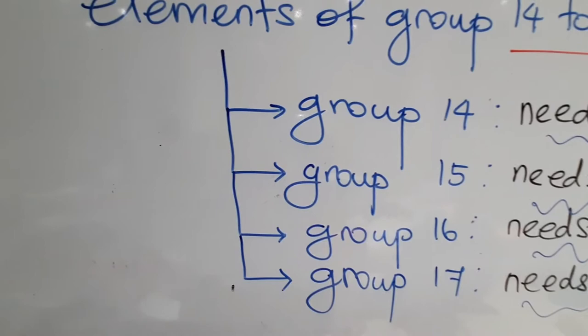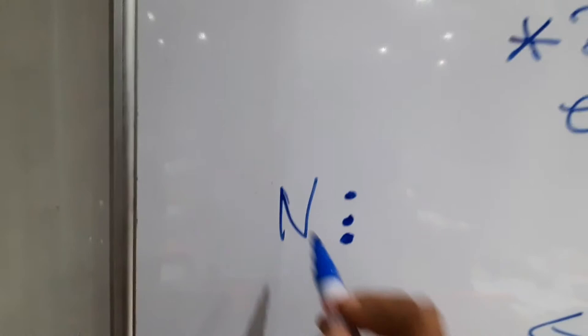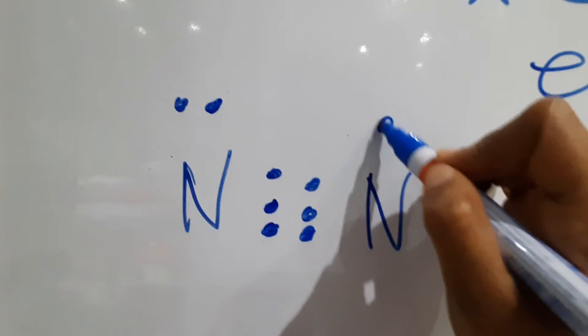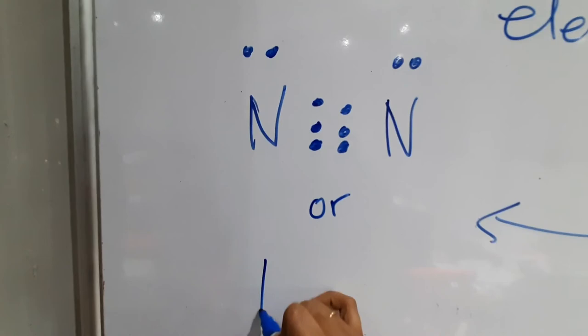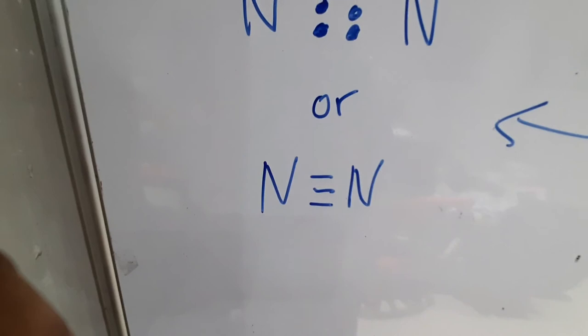Now let's look at group 15, taking nitrogen as an example. Nitrogen has 5 valence electrons, and being from group 15 it needs 3 more electrons. So you allocate 3 electrons for sharing, with 2 remaining. The other nitrogen atom also shares 3 valence electrons. You can draw the 2 nitrogen atoms each contributing 3 valence electrons for sharing so that they achieve a stable electron arrangement. Hence, a nitrogen molecule is formed.